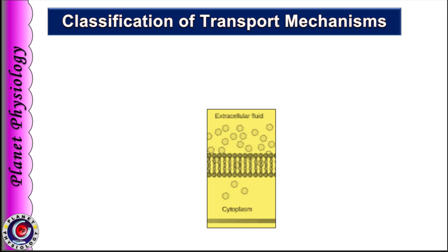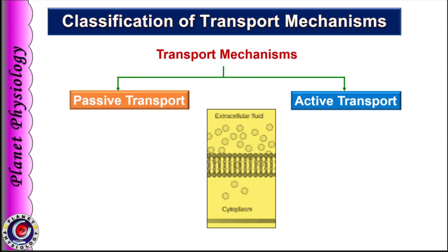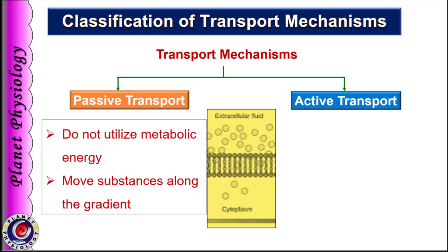Based on the energy utilized to move the substances, transport mechanisms across the cell membrane can be classified into two: passive and active transport. Passive transport mechanisms do not utilize any chemical or metabolic energy as they move substances along the gradient, that is from higher concentration to lower concentration or from high pressure to low pressure.